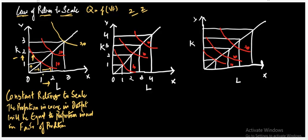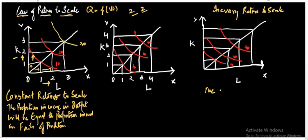Now, if I increase capital and labor and there is also an increase in efficiency, this results in increasing returns to scale. The second part we are going to talk about is: what if there is increasing efficiency of the factors of production? In such a case there will be increasing returns to scale.